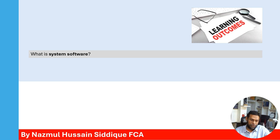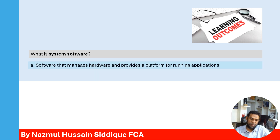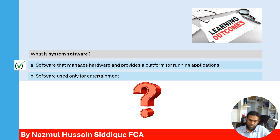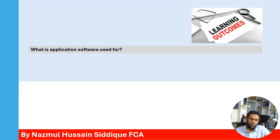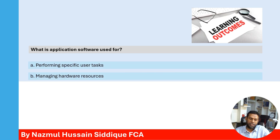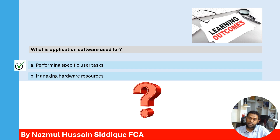Question four: What is system software? Option A: software that manages hardware and provides a platform for running applications. Option A is the correct answer — that is the definition of system software. Question five: What is application software used for? Option A: performing specific user tasks. Option B: managing hardware resources. Option A is the correct answer — application software is used for performing specific user tasks.